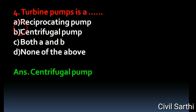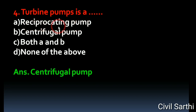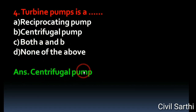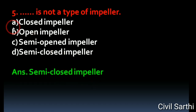Question No.4: A turbine pump is. Option A: Reciprocating Pump. Option B: Centrifugal Pump. Option C: Both A and B. Option D: None of the above. The right answer is Centrifugal Pump.